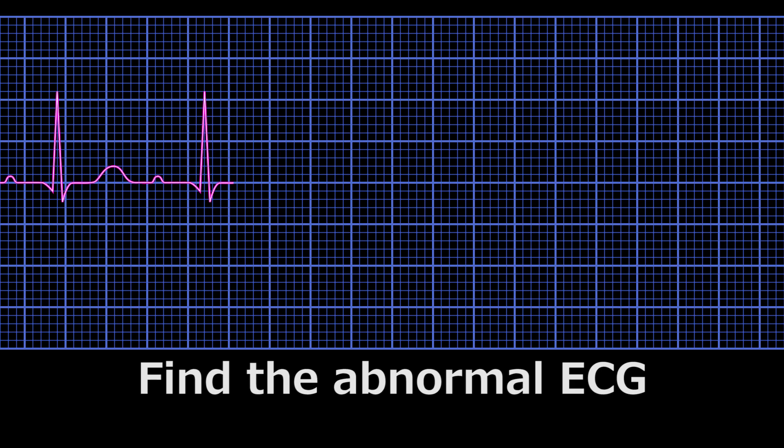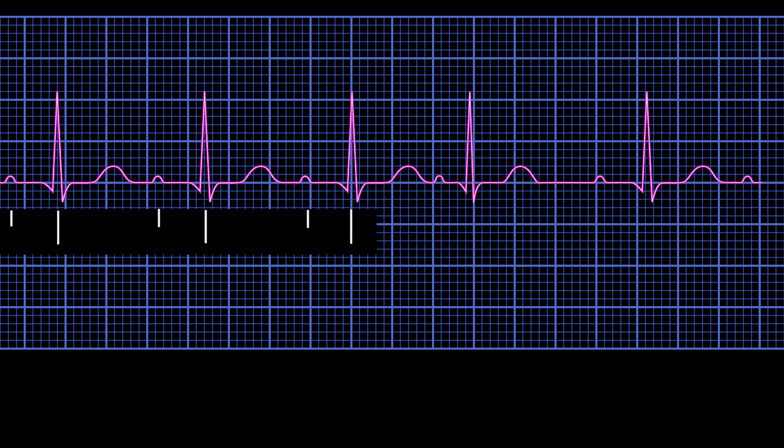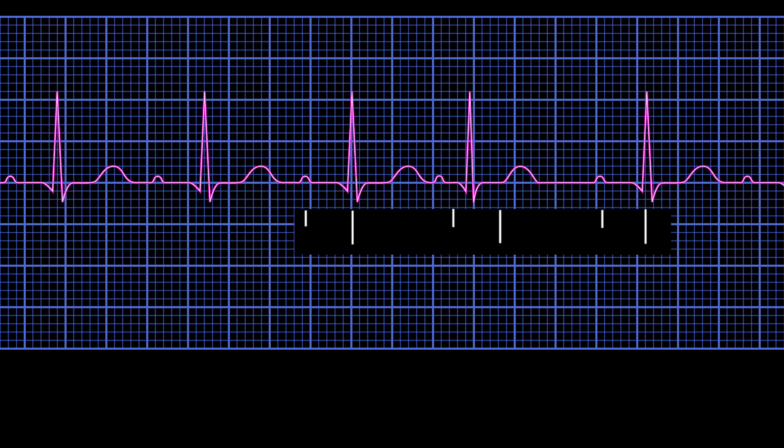An abnormal ECG shows where the rhythm is off, and is used to diagnose where the abnormality in electrical current has occurred.